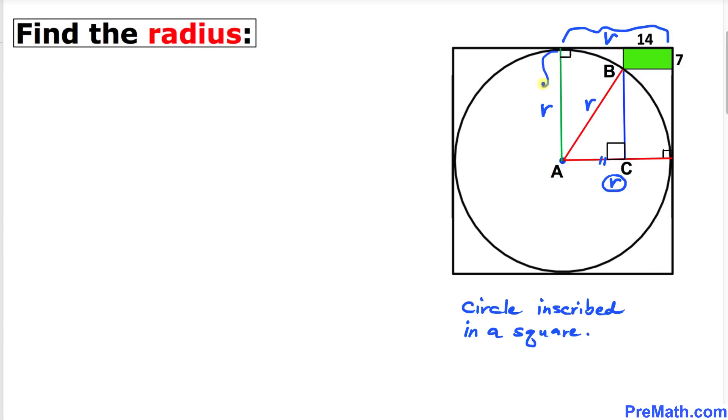Then this part is going to be radius r as well. And likewise this is our radius r. Then this part is going to be our radius r as well. Now we know that this whole length is r and this length is 14 units. Then this length has got to be r minus 14.